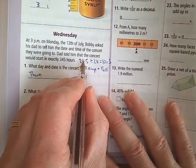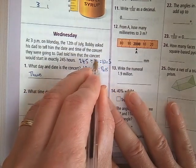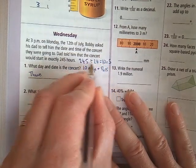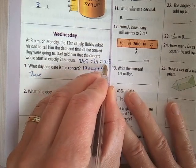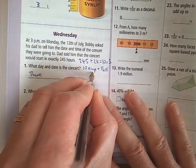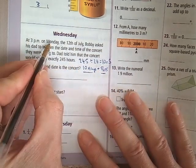245 hours. If you divide that by 24, you get 10 remainder 5. Because 24 times 10 is 240. So each 24 hours is one day. So if there's 10 24-hours, that's 10 days. And the remainder 5 is an extra 5 hours.